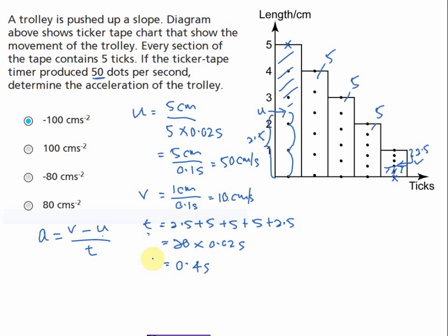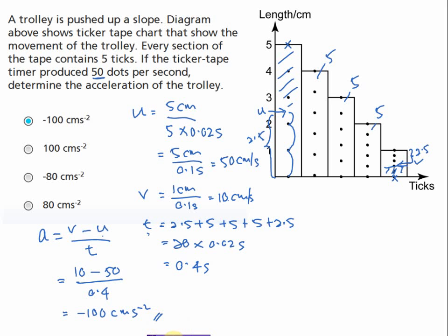Now that we have u, v, and t, we can find the acceleration. Plugging in: v equals 10 cm/s, u equals 50 cm/s, and t equals 0.4 seconds into a equals (v minus u) over t. Using a calculator, the answer is negative 100.5 cm per second squared.